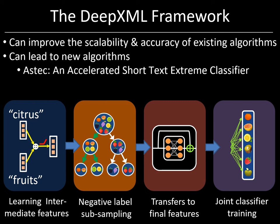Varying the choices of the different components in these four modules leads to a family of algorithms with varying trade-offs between scalability and accuracy. The proposed DeepXML framework has three benefits: first, it allows us to compare seemingly disparate deep extreme classifiers such as XML-CNN and MAC; second, it allows improvements to be made to these classifiers when they are recast in the proposed framework; and third, it allows the development of new algorithms that are scalable and accurate. We call our new algorithm for short text applications Aztec, which stands for Accelerated Short Text Extreme Classifier.